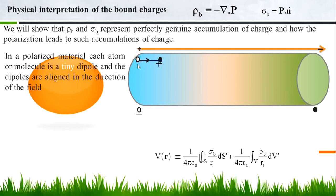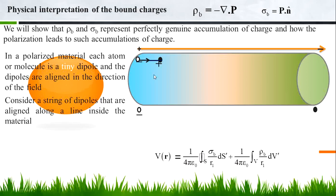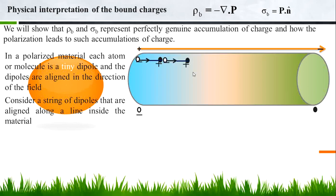What happens is there is one positive center and one negative center. Due to the applied electric field, the negative center is slowly attracted towards the positive side, and the positive center is gradually attracted towards the negative side. This is a very small displacement — this creates a dipole. There are a large number of such dipoles, and all dipoles are aligned in the direction of the applied electric field.